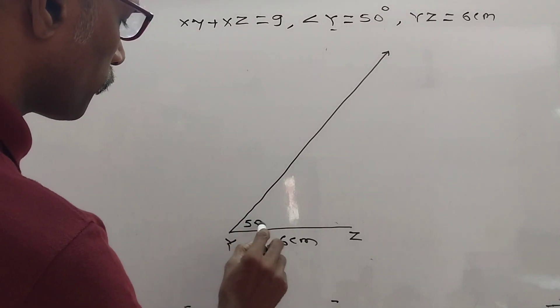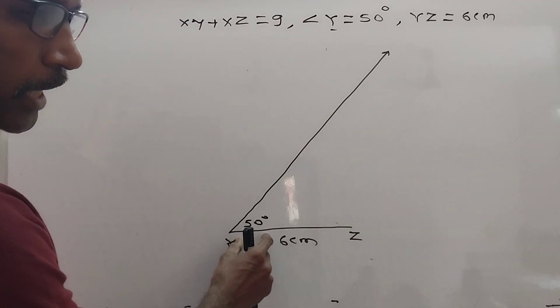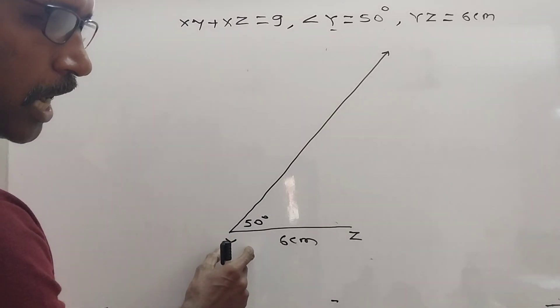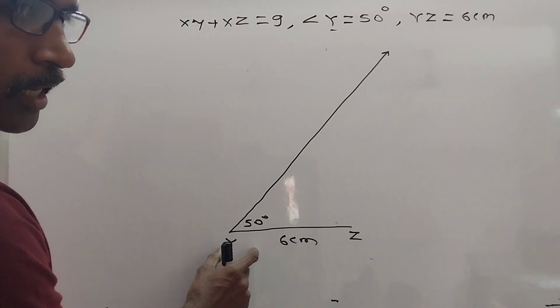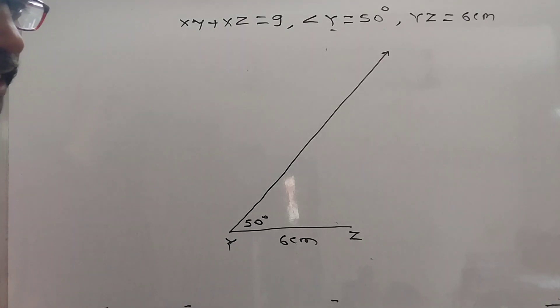Why 50 degrees? The measure of given angle is always at left. Always at left. Did you understand?